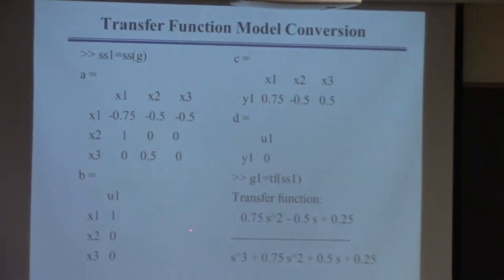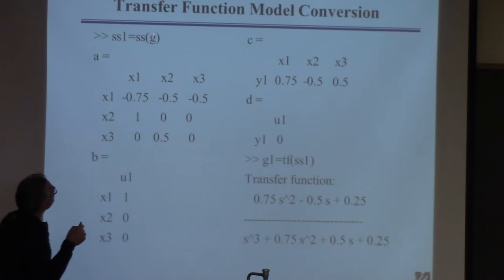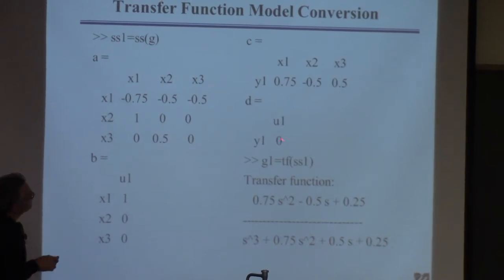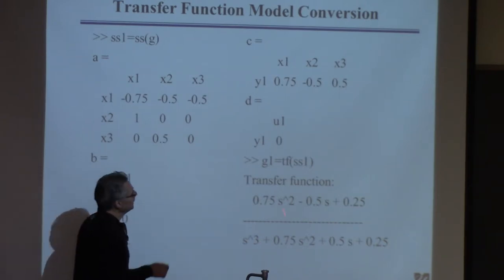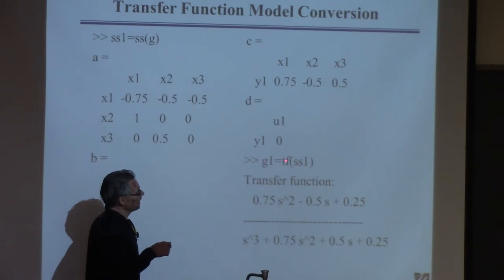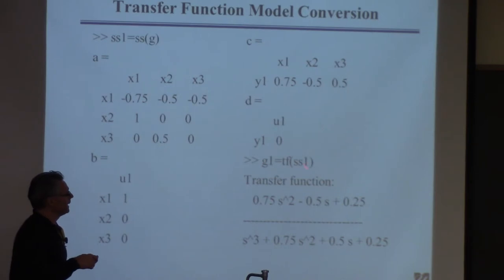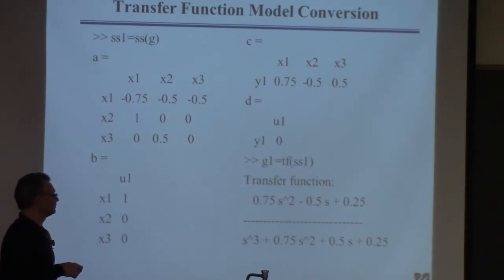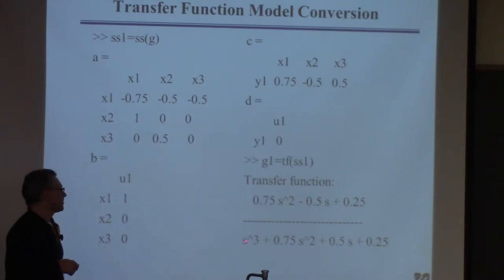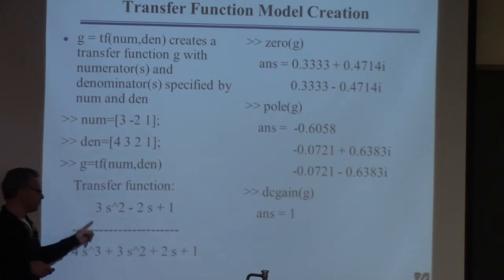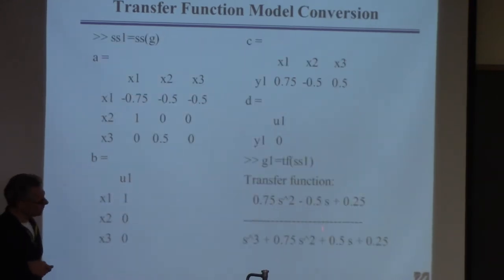You can take that state-space model and recreate a transfer function using the 'tf' command. Issuing 'G1 = tf(ss1)' creates a transfer function. The result looks slightly different — the coefficients may be scaled differently — but if you divide top and bottom by the same factor, you get the same transfer function. This illustrates that you can readily convert back and forth between model forms.